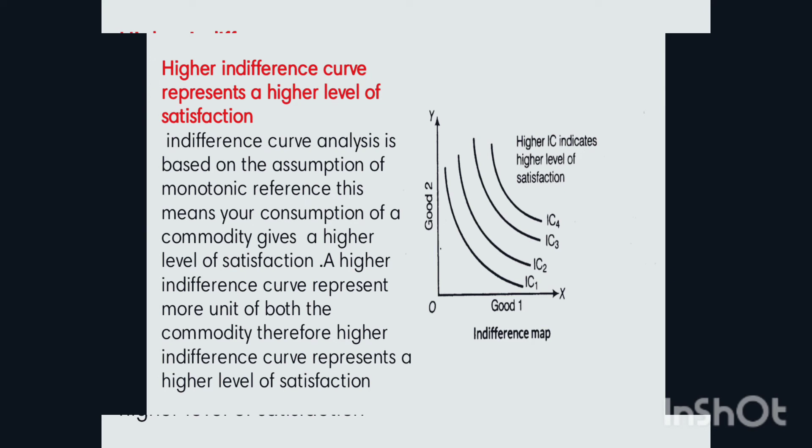Each indifference curve represents a specific level of satisfaction. Indifference curve analysis is based on the assumption of monotonic preference, which means consuming more of a commodity gives a higher level of satisfaction. Each indifference curve represents combinations of both commodities. As you can see in this image, IC3 gives a greater level of satisfaction, meaning both commodity 1 and commodity 2 together are giving the same level of satisfaction to the consumer.